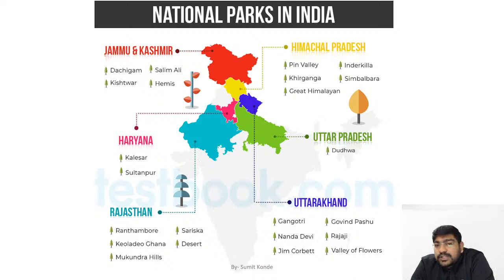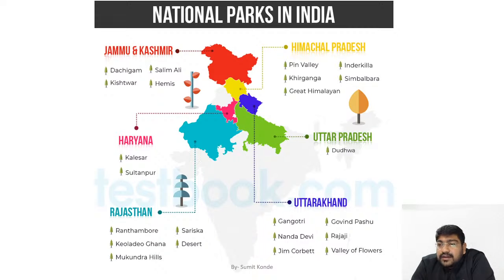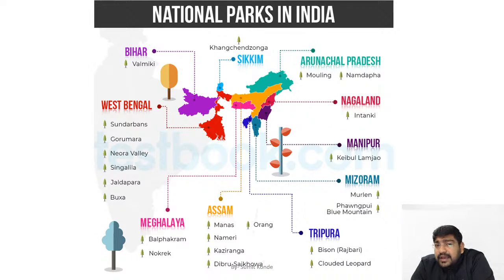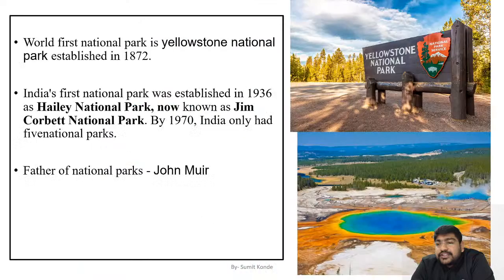First, we have seen Jammu Kashmir — Dachigam, Salim Ali, Kishtwar — and parts of Himachal Pradesh. We have seen Haryana, UP, Rajasthan, Uttarakhand — all the national parks. Then after that, North East, Bihar, West Bengal, Sikkim, and the entire North East part. We have covered this in the last lectures.